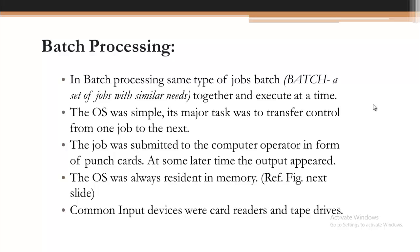The operating system's major task was to transfer control from one job to the next. When a job arrived, the operator would decide which batch or group it belonged to, and it was batched with other jobs in the same group. At some later time these jobs were run together. The job was submitted to the computer operator in the form of a punch card, and the output appeared later because it was not executed on the spot.